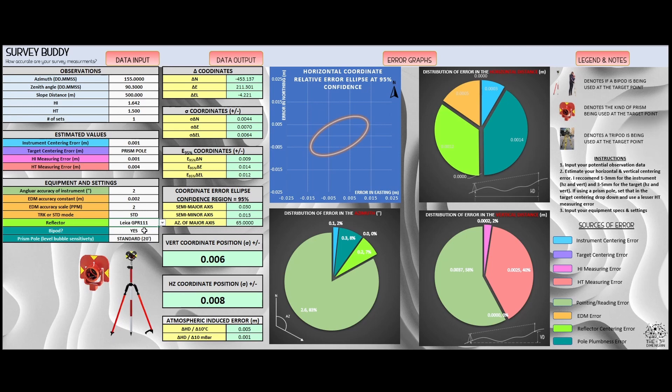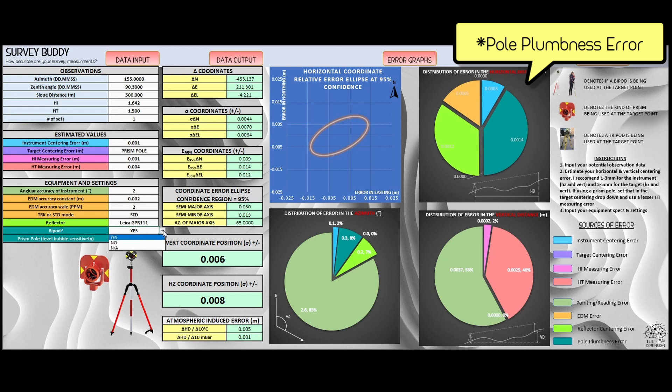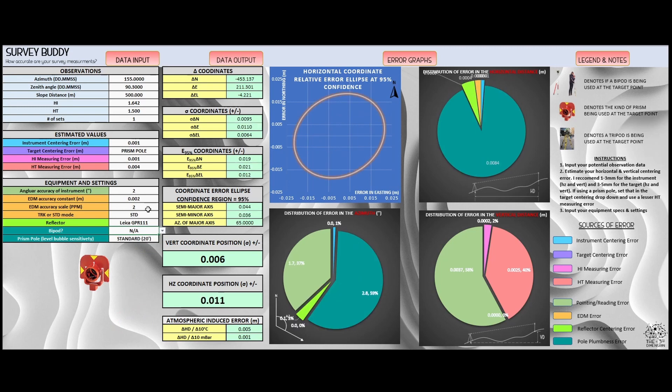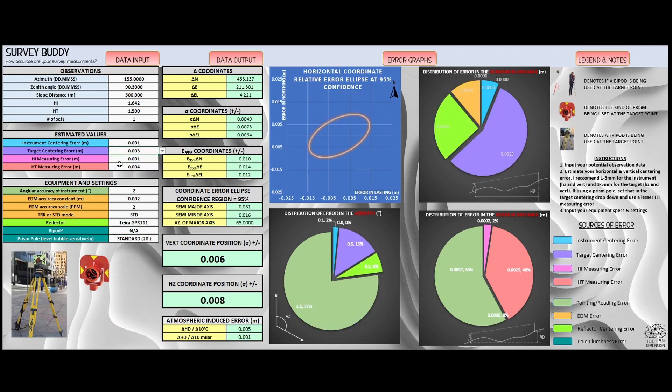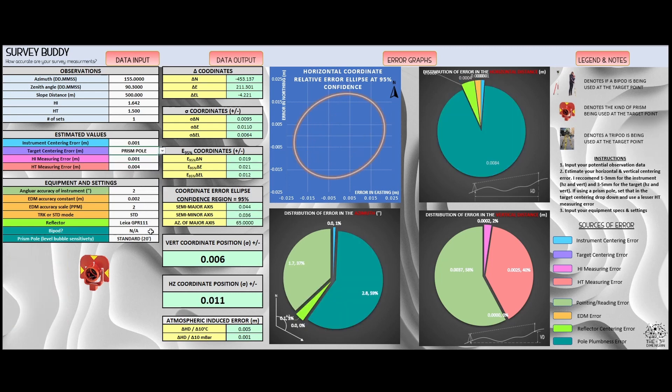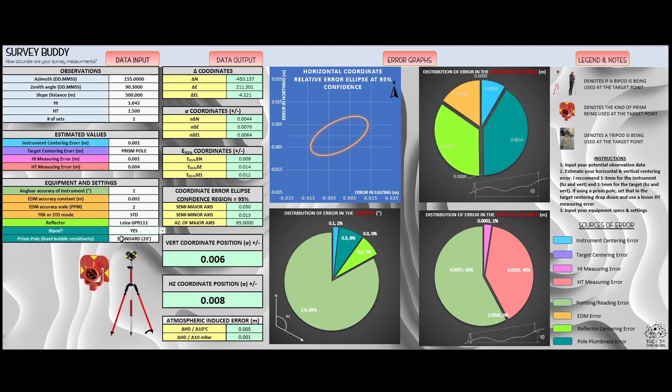A bipod is going to influence your plumb plumbness. It's only going to come into effect when you're using a prism pole. If you're not using a prism pole, set that to not applicable, and the program will know if you're manually entering in a target centering error. I tend to use a prism pole more often than not with a bipod, so let's start off with that. The prism pole level bubble sensitivity also is going to affect your pole plumbness error. The pole I usually use, and probably that you'll be using as well, is the standard 20 minute level bubble sensitivity. The bigger topple poles, some of them use 40 minute and some of the higher precision poles use 8 minute. The vast majority is 20 minute.